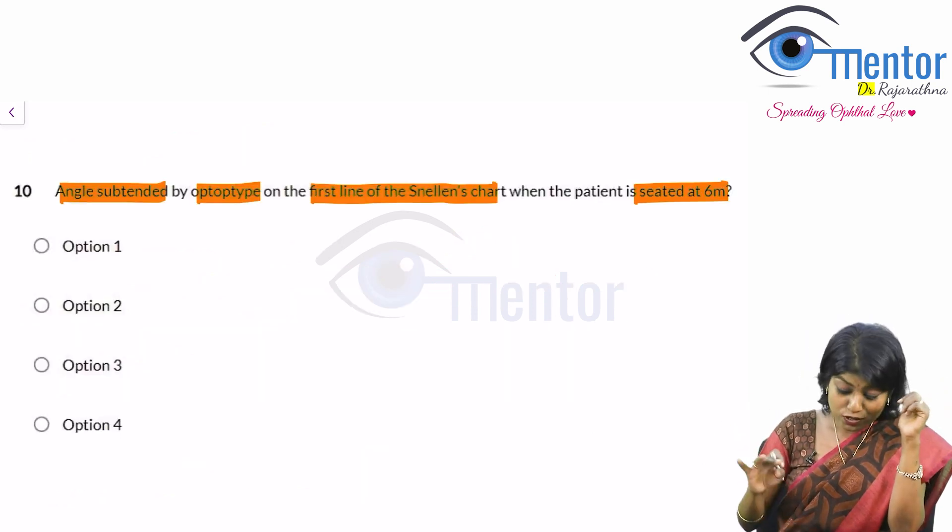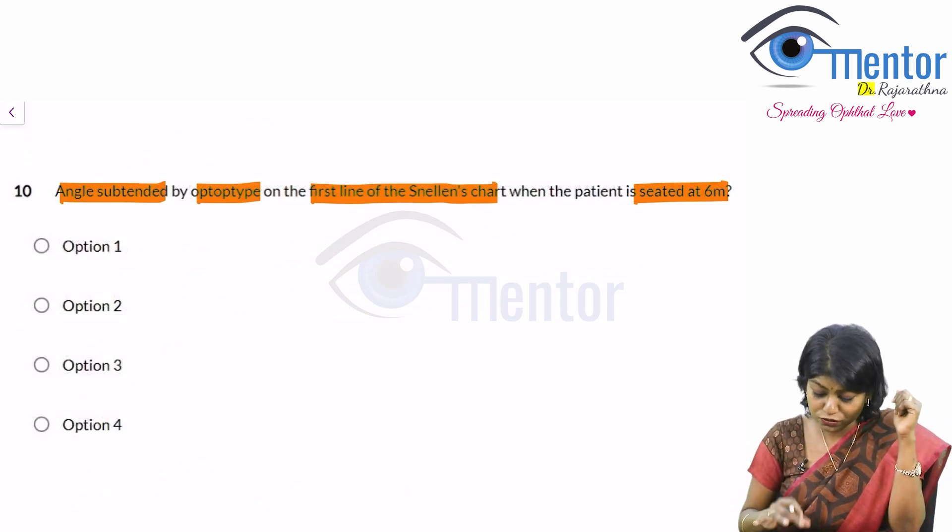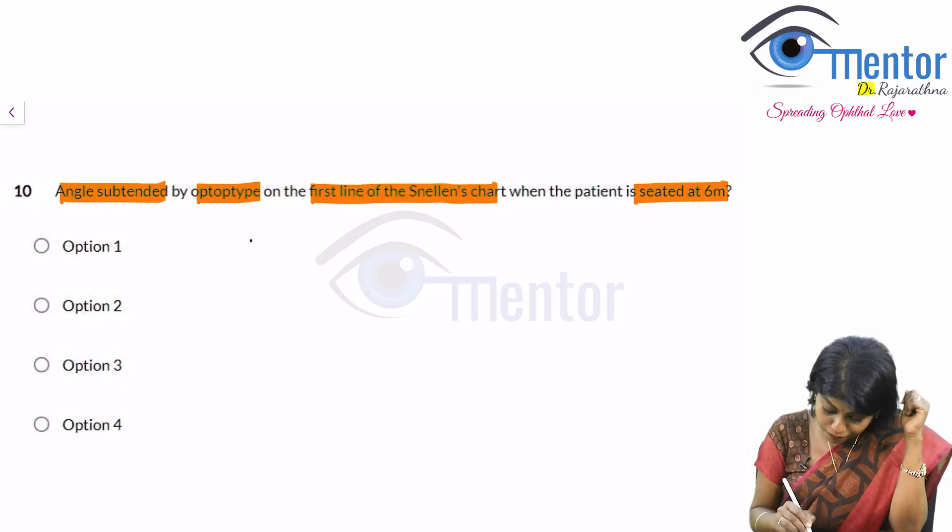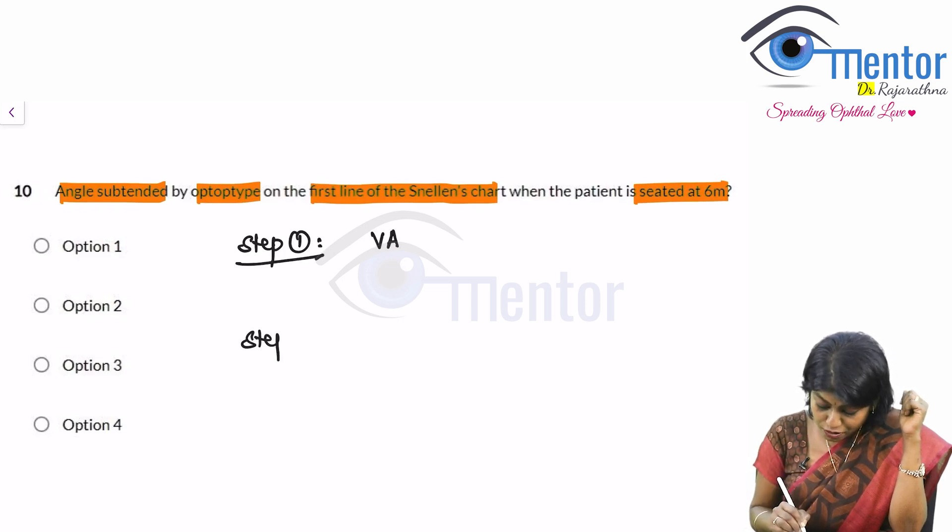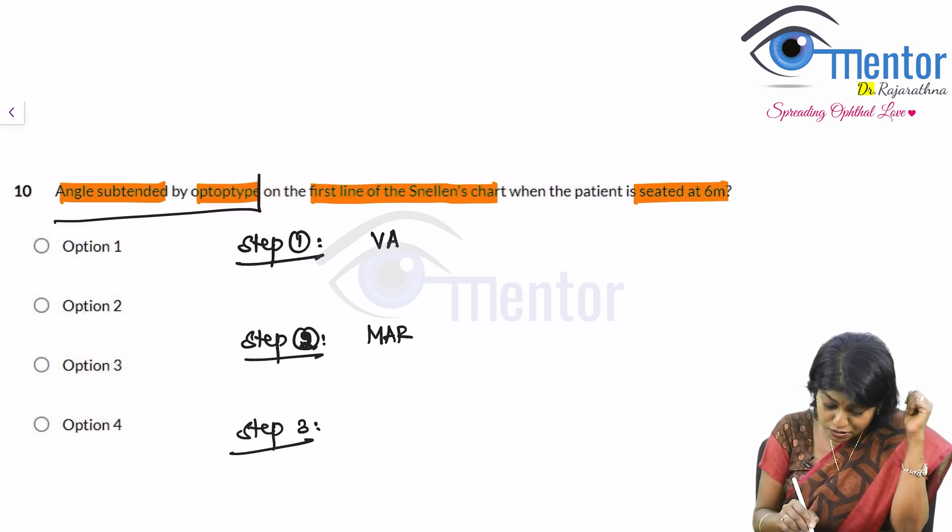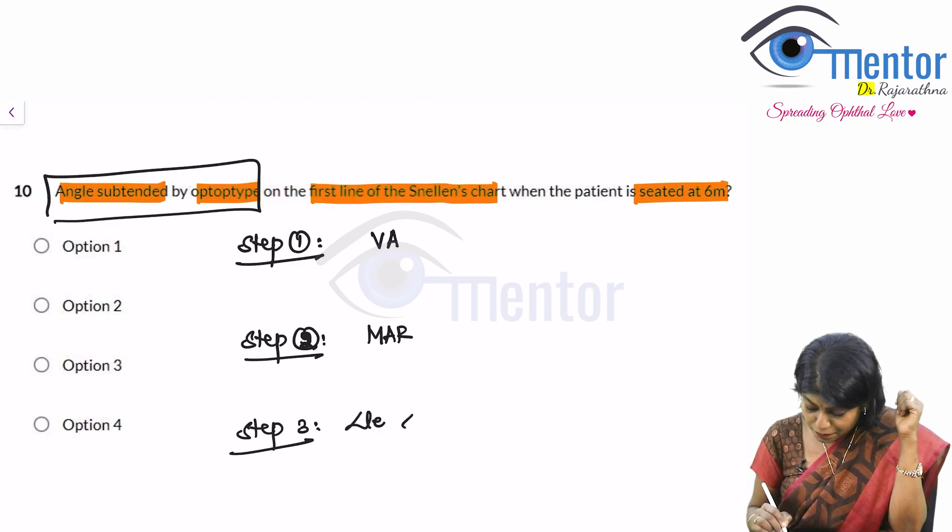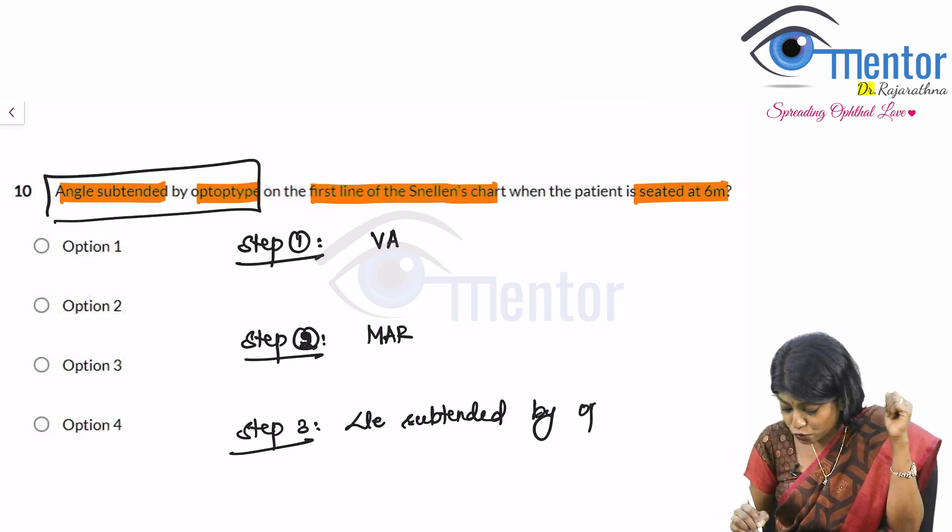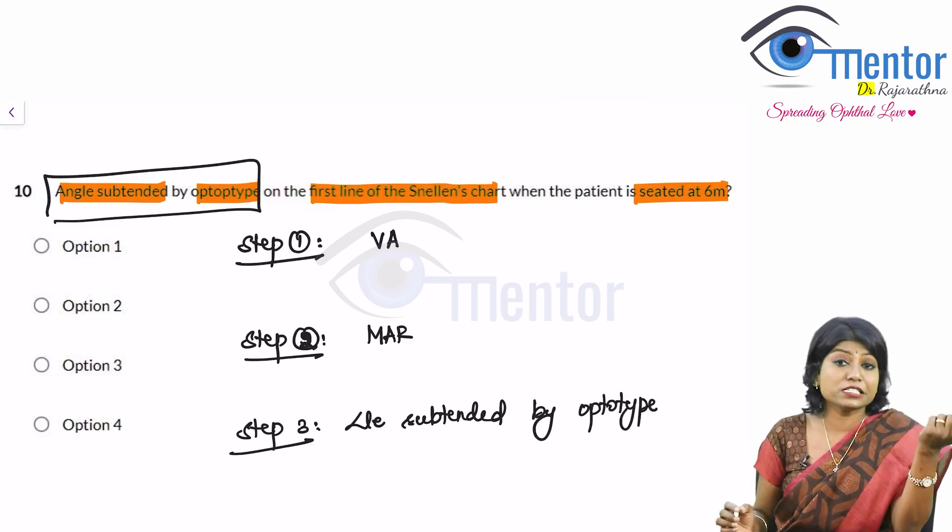Now let us come to a question. Now that you know all this. So what is the angle subtended by the optotype of the first line? So step 1, find the visual acuity. Step 2, find the minimum angle of resolution. Step 3, what have they asked? Angle subtended by optotype. Now that you know what each word and each concept means, it is going to be very easy for you.